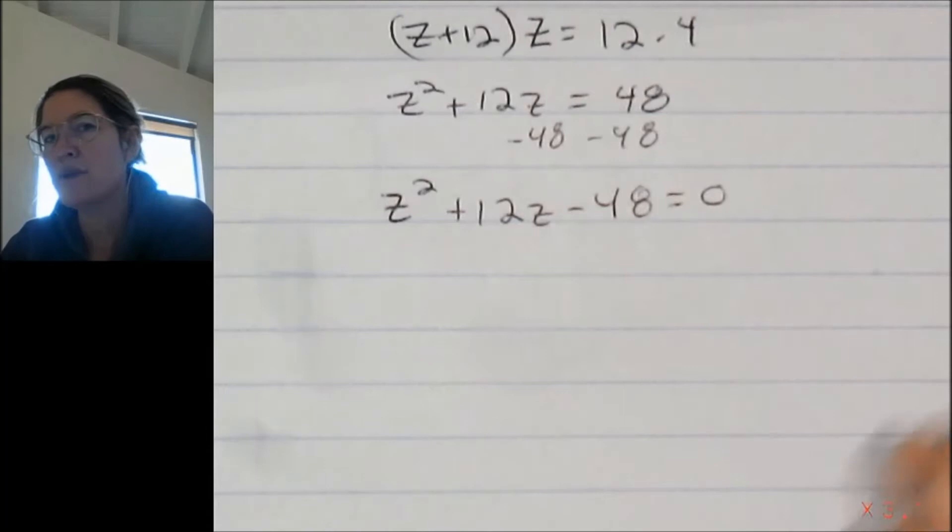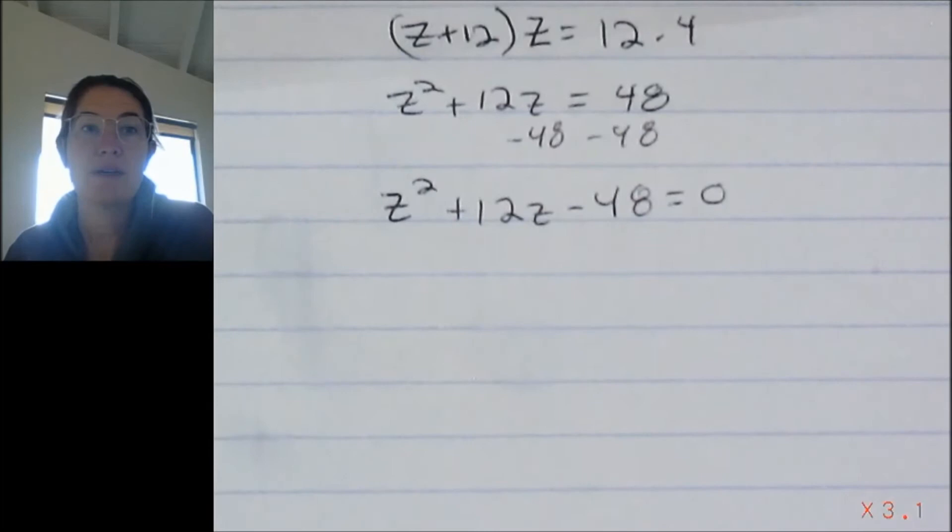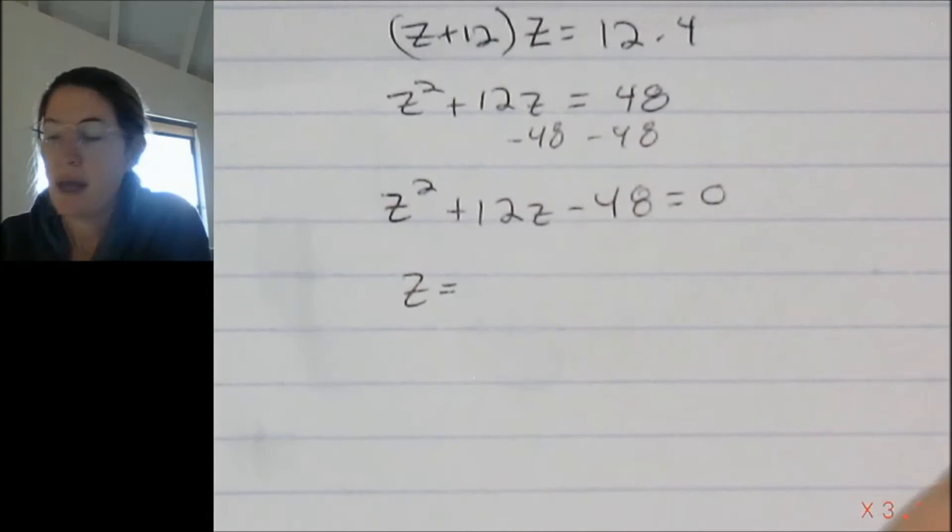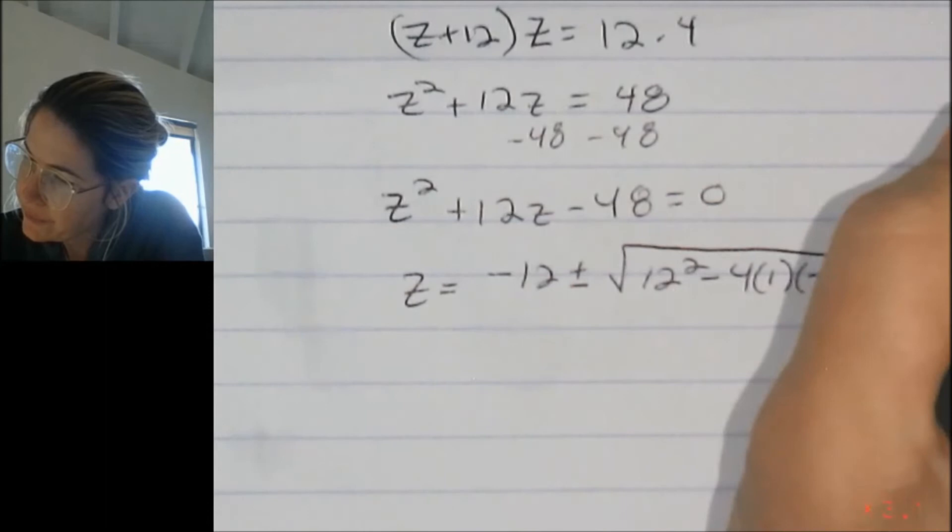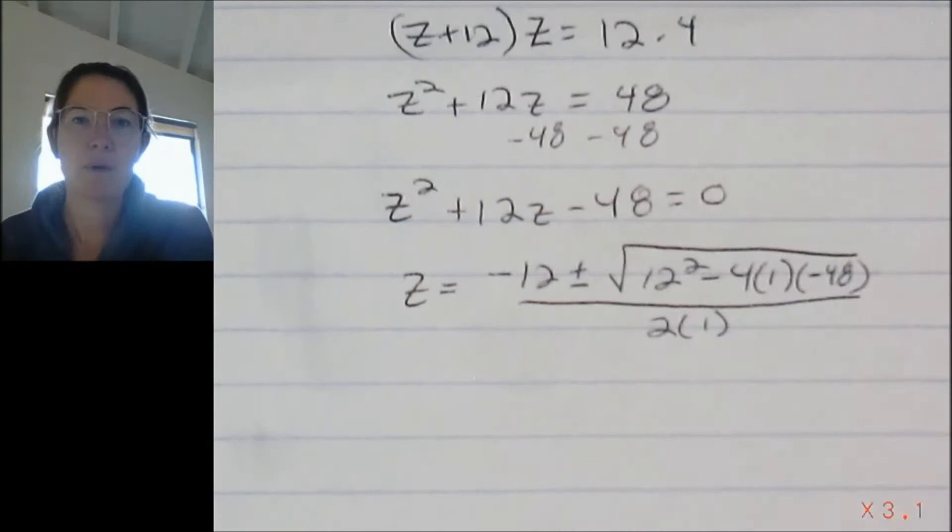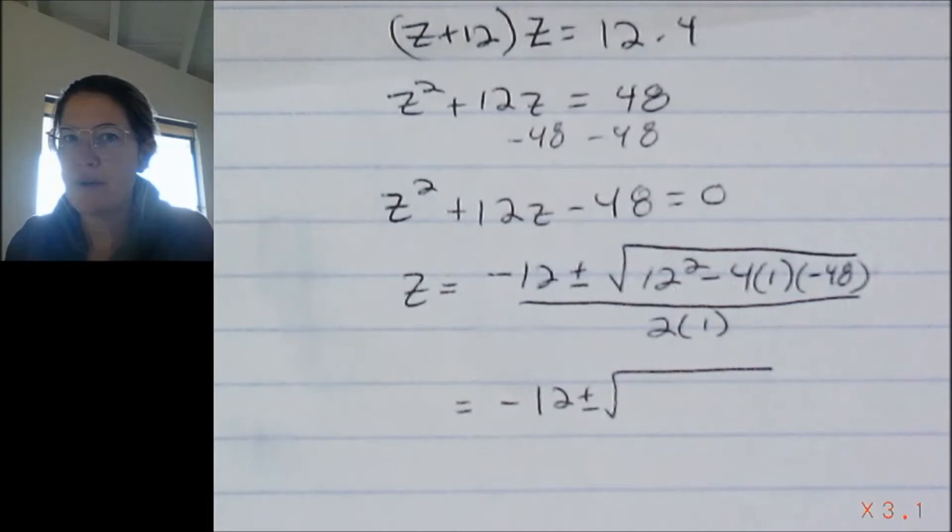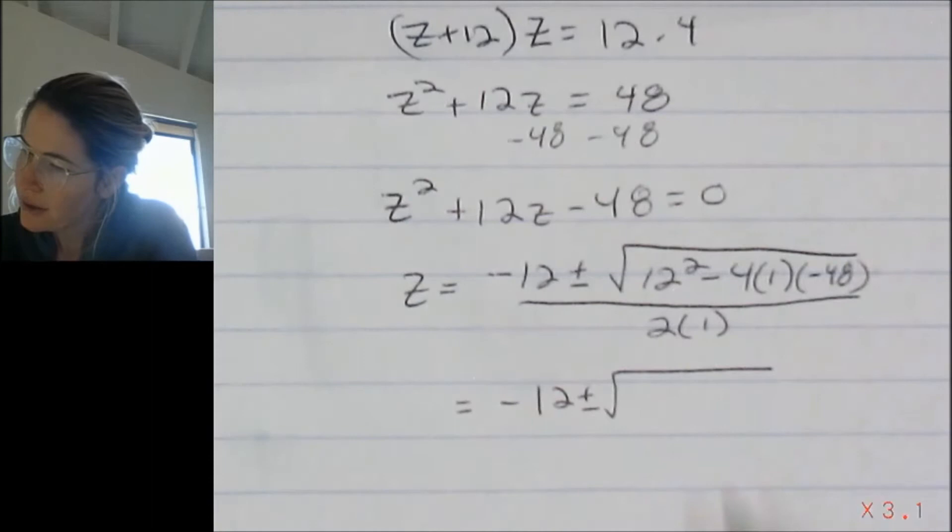All right, and this guy does not factor. So I can't think of anything that multiplies to be a negative 48 and adds to be a positive 12. Okay, so that means we're going to use the quadratic formula. So z is equal to negative b plus or minus the square root of b squared minus 4ac all over 2a. All right, so we're going to get 12 squared, that is 144 plus 4 times 48 is 192. So adding those up, 336 all over 2.